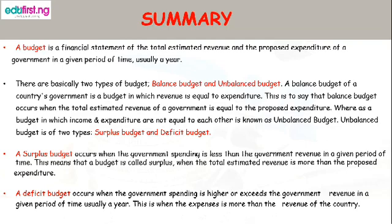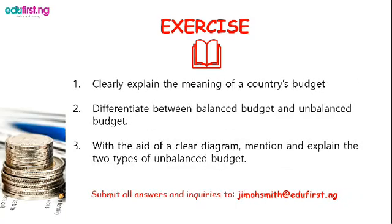Unbalanced budget is of two types: surplus budget and deficit budget. A surplus budget occurs when the government spending is less than the government revenue in a given period of time, usually a year. A deficit budget is when expenses are more than the revenue of the country. We've come to the end of this lesson; I will leave you with an exercise to do.